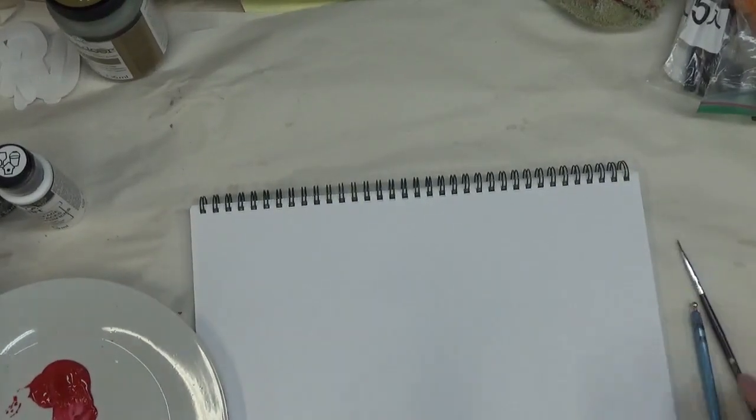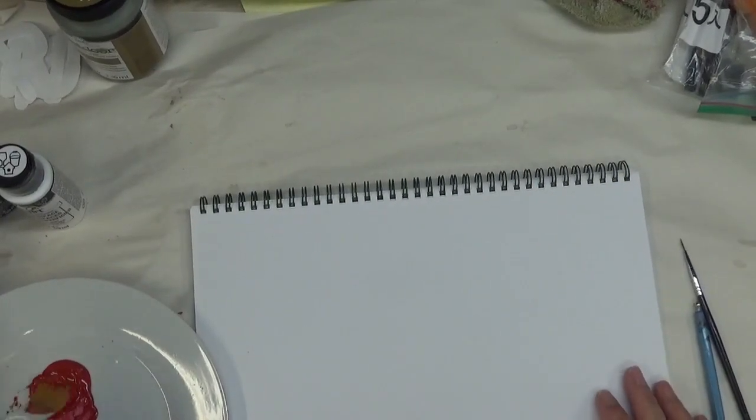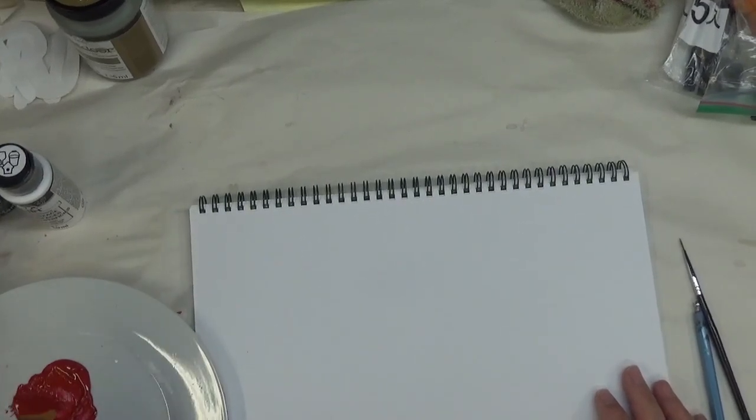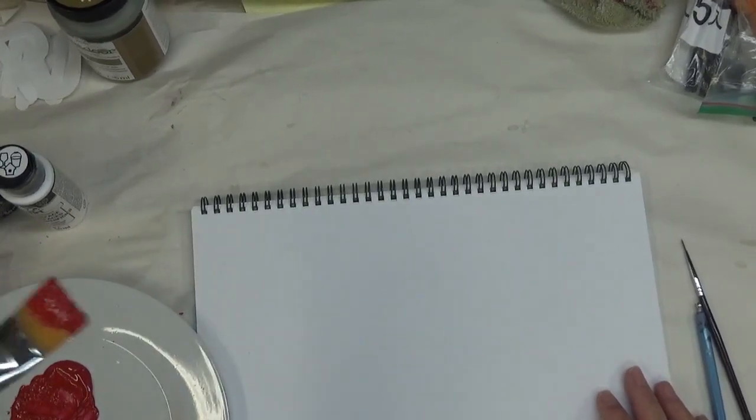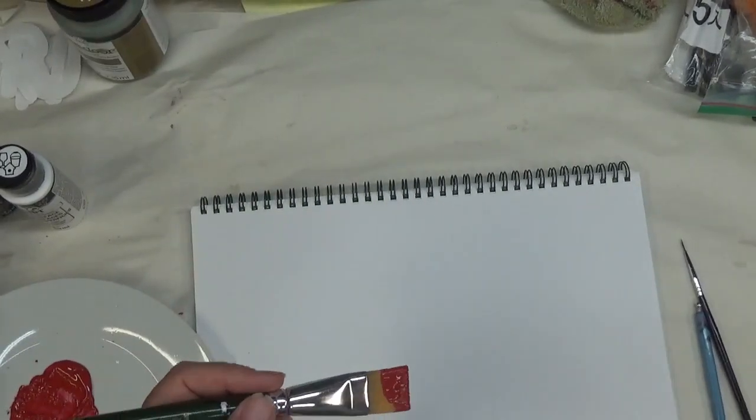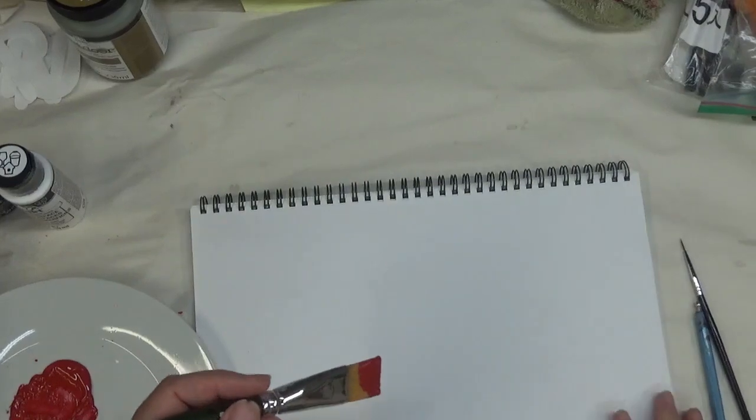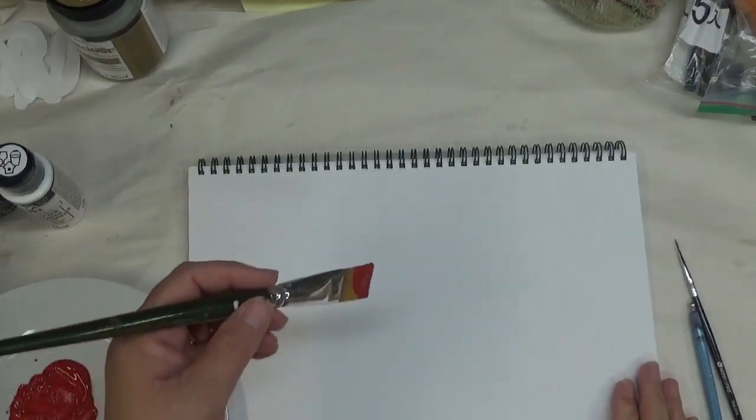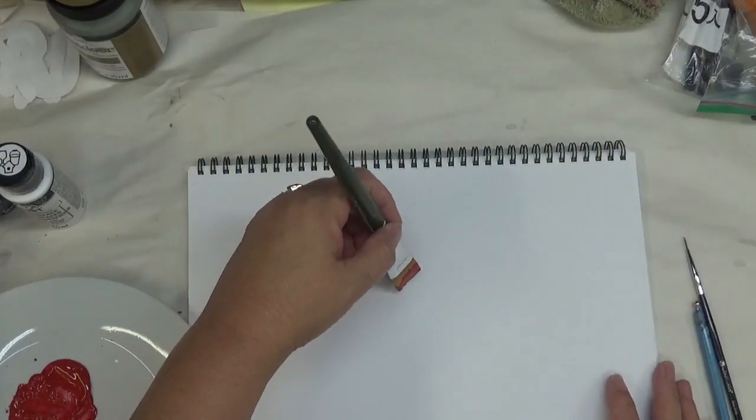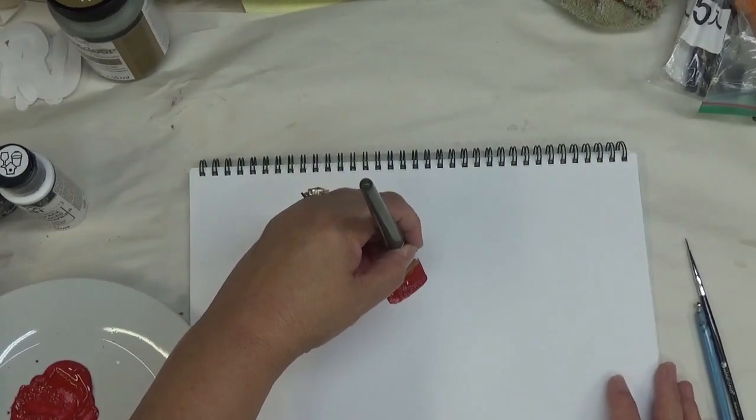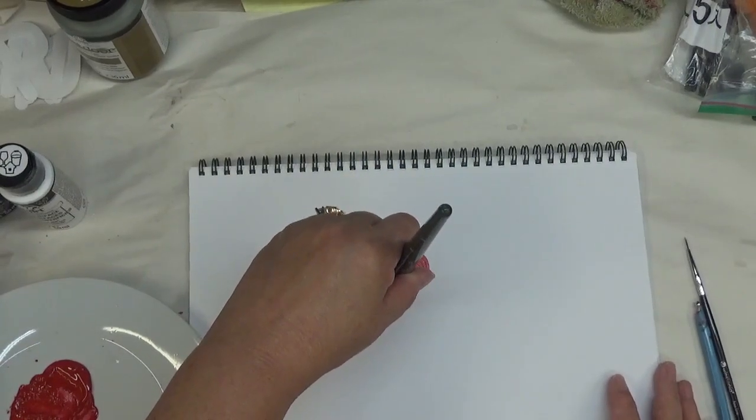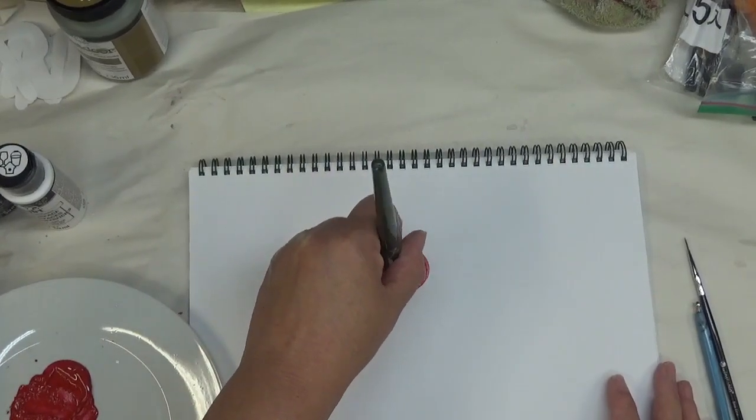Alright, so let's get started. We're going to basically begin by filling our brush with the red, just the engine red. Now keep in mind I am a lefty, so you may have to go the opposite direction from what I'm doing, but just keep that in mind. Alright, so I'm going to put the brush down and I'm going to press it down, swing it around.